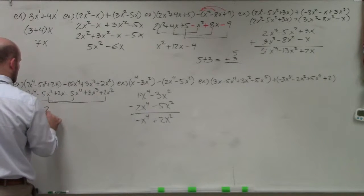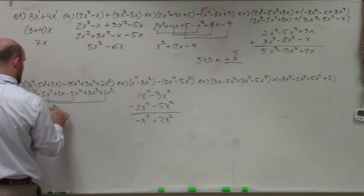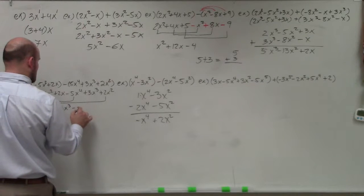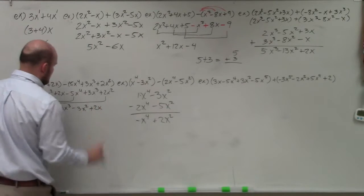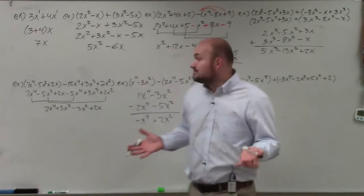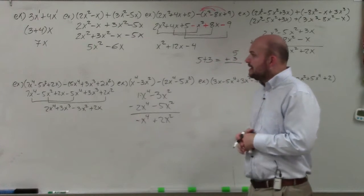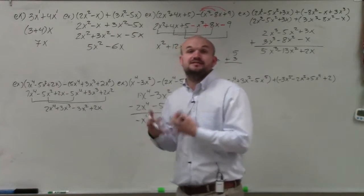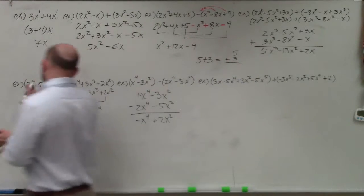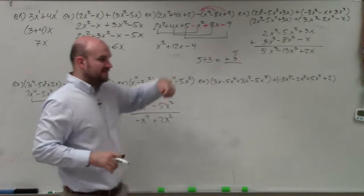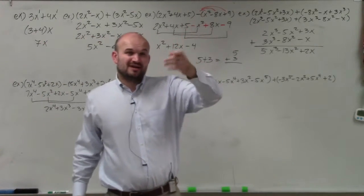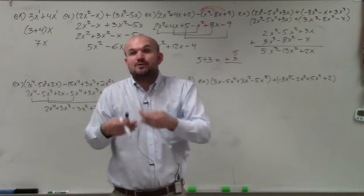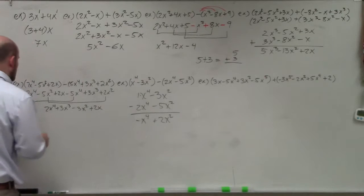My final answer is 2x to the fourth plus 3x cubed minus 3x squared plus 2x. I like the grouping method because you can only group terms that have the exact same base and the same power, so it won't allow you to accidentally group things that don't belong together. However, if you use the vertical method, I want to make sure you understand using place values, because all polynomials start with your highest power — your degree — in descending order, and if you're missing a power, you use 0 as the coefficient.